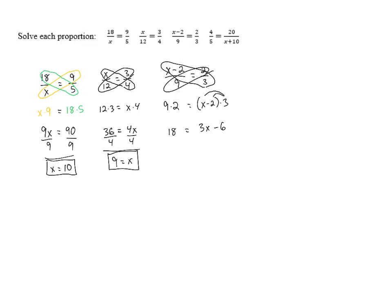And now we've got a regular linear equation we can solve for x. To get that x term alone, we add 6 on both sides, giving us 24 equals 3x. And if we divide both sides by 3, that gives us 8 equals x.